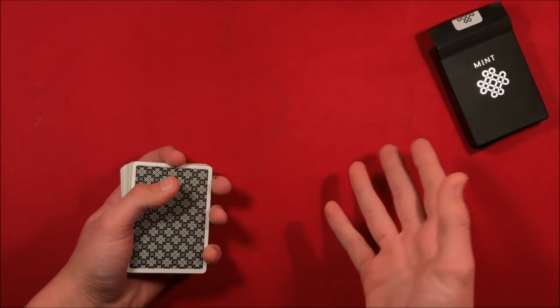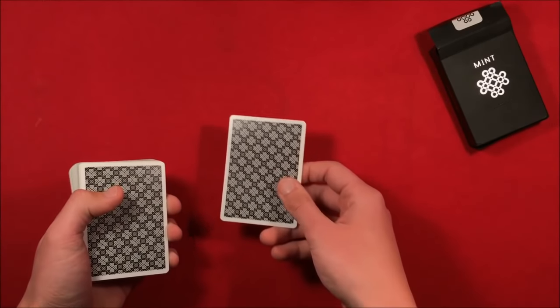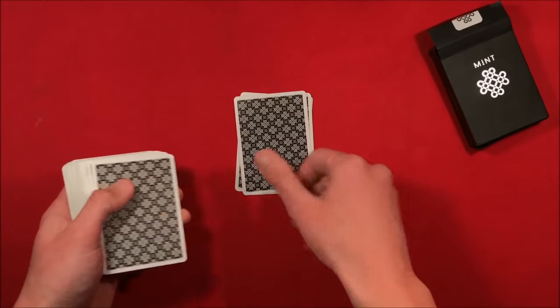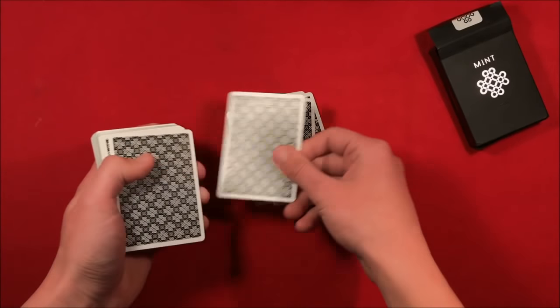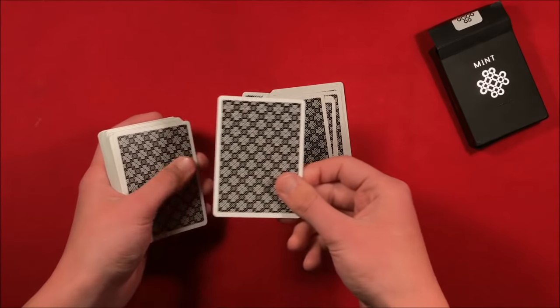Let's say they were to pick any number between 10 and 20. Let's say they picked a number like 13. What you're going to do is you're going to count out 13 cards. So 1, 2, 3, 4, 5, 6, 7, 8, 9, 10, 11, 12, 13.